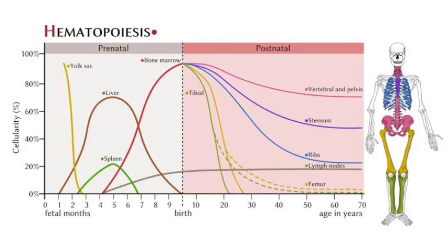Different types of organs are involved during hematopoiesis. In the fetus, the yolk sac is responsible for making red blood cells, white blood cells, and platelets — called primitive hematopoiesis. Then it moves toward definitive hematopoiesis, where the liver, spleen, bone marrow, and lymph nodes are involved in the whole process.